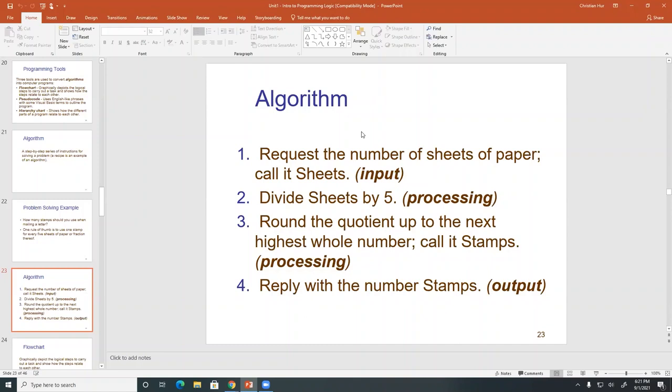And how do you calculate how many stamps you need, right? So you do that by, if you divide the number of sheets by 5, then you get the number of stamps. For every five sheets, you get one stamp.